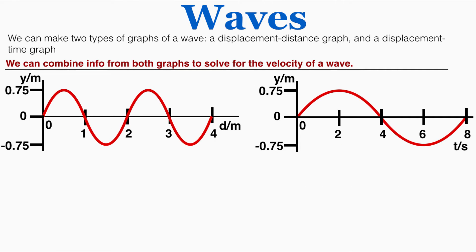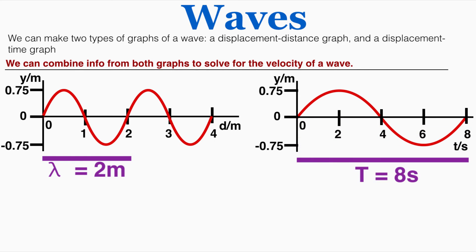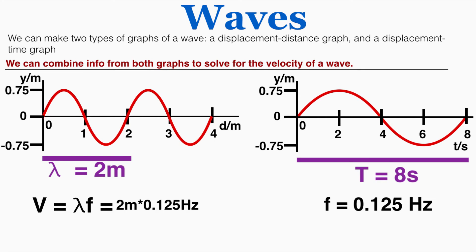We can combine information from both graphs to solve for the velocity of a wave. The displacement-distance graph gives us the wavelength, the displacement-time graph gives us the period, and we use frequency equals 1 over period to find the velocity, since velocity equals wavelength times frequency. Here the velocity is 2 meters times 0.125 Hertz, which equals 0.25 meters per second. We can determine the velocity from the properties of these two graphs without directly observing the wave itself.